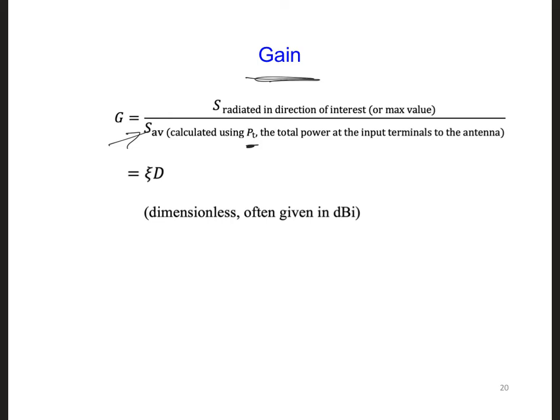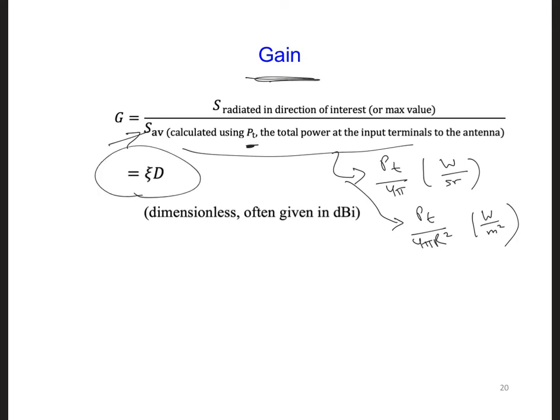And again, the denominator can be written as Pt over 4pi, if we want watts per steriradian, or it can be written as Pt over 4pi r squared watts per meter squared, so the units match the numerator. So in other words, gain takes into account the losses in addition to the directionality. This means the gain can tell us how well an antenna can transform the power at its input terminals to radiated power in a particular direction of interest. So as a result, we can also write the gain in terms of directionality as the efficiency times the directionality. And as for directivity, the gain is dimensionless, and you will often see it written in units of dBi.